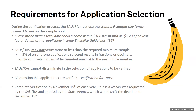All questionable applications are verified — that is called verification for cause, and that is discussed in the eligibility manual. Complete the verification by November 15th of each year unless a waiver for an extension was granted. The sample size is 3% of applications, and you must round up to the next whole number if it's a fraction. Randomly select from error prone applications first.